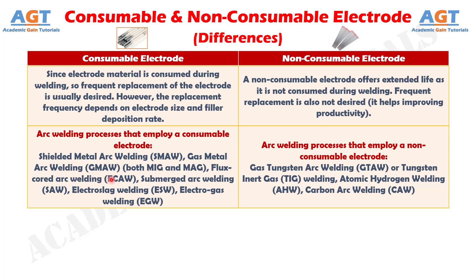flux-cored arc welding, submerged arc welding, electro-slag welding, electro-gas welding, etc., whereas arc welding processes that employ a non-consumable electrode include gas tungsten arc welding or TIG welding, atomic hydrogen welding, carbon arc welding, etc.